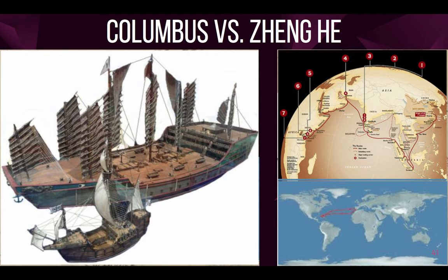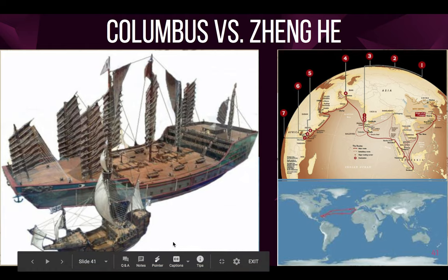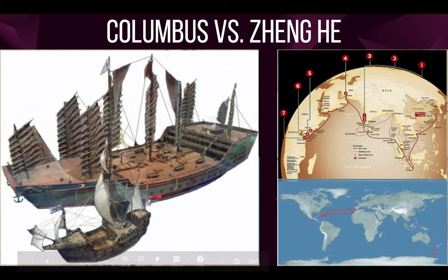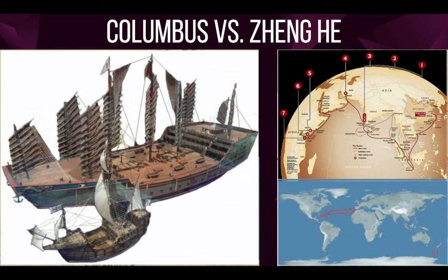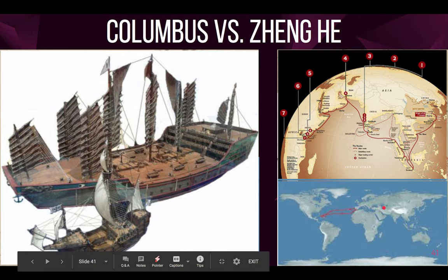Zheng He's fleet was about 20 times the size of Columbus's. This is Zheng He's primary ship, and this is Columbus's, one of his caravels. Also, in terms of the length of the journey, Zheng He traveled a lot farther. Zheng He reached at least the east coast of Africa, and there are some historians that speculate he actually went farther than that, whereas Columbus's voyages were more or less a straight transatlantic voyage.